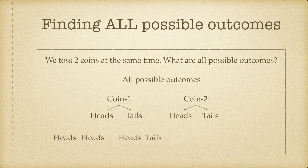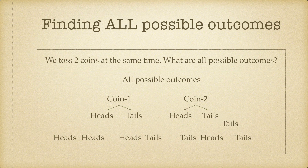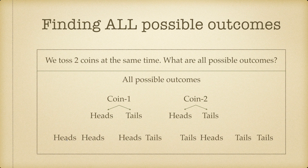Now let's say we get tails on coin one and heads on coin two — that is our third outcome. And finally, we get tails on coin one and tails on coin two. The first part of each outcome represents coin one, and the second part represents coin two.